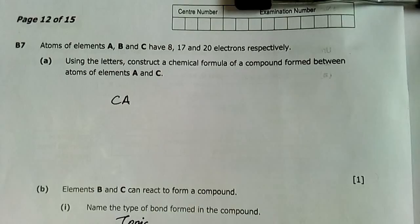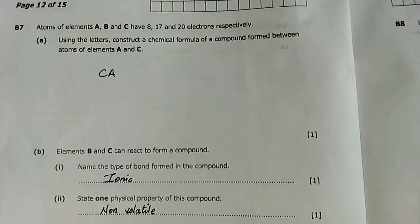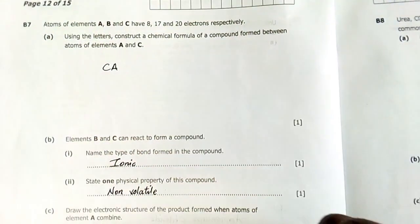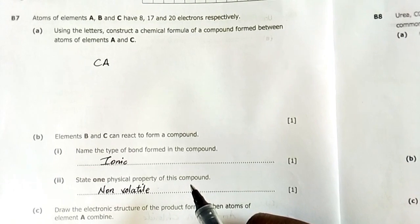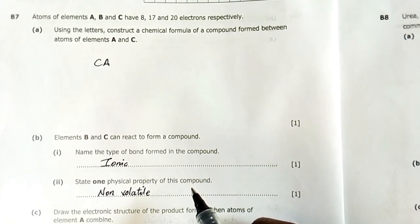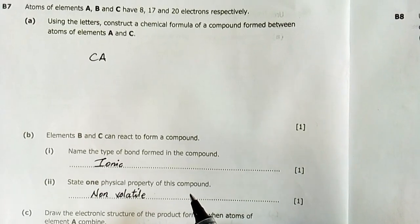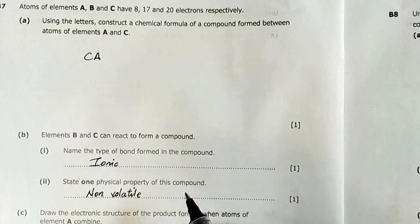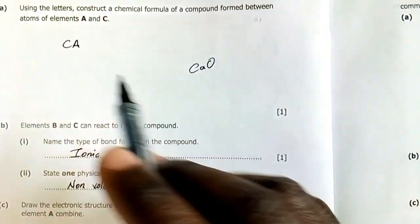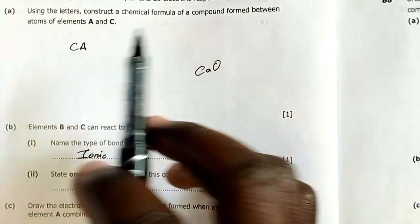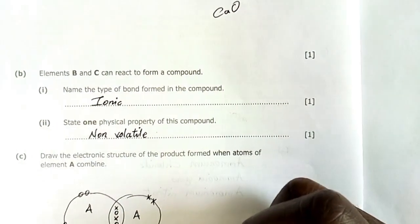Question 7: Atoms of elements A, B, and C have 8, 17, and 20 electrons respectively. Using the letters, construct a chemical formula of a compound formed between atoms of A and C. If A has 8 electrons, it's related to oxygen. If C has 20 electrons, it's related to calcium, which can form calcium oxide. The formula is CA with no ratios—a one-to-one ionic combination.